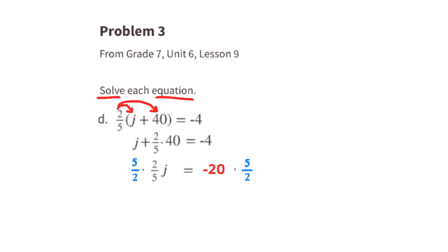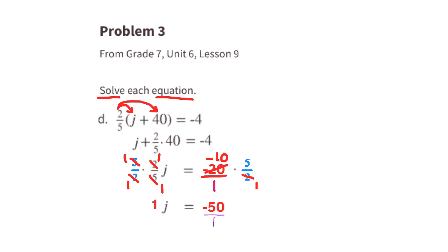We want the value for 1j, so we multiply both sides by the reciprocal of 2/5, which is 5/2. On the right-hand side, we multiply negative 20 over 1 by 5/2. We can simplify: 2 goes into 2 once, and 2 goes into negative 20 negative 10 times. So we have negative 10 times 5 over 1, which is negative 50 over 1, or negative 50. So j equals negative 50.